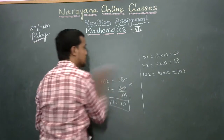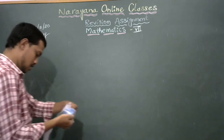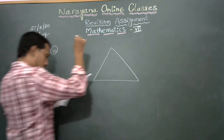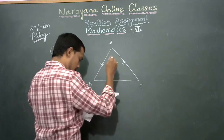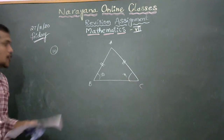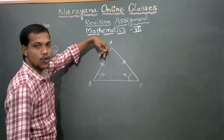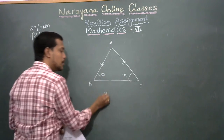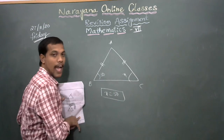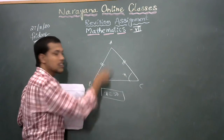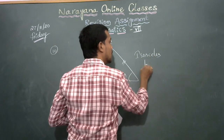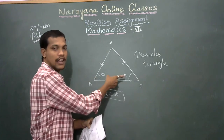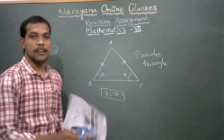Now the last question: in triangle ABC, one angle is 50 degrees and another angle is x. Since two sides are equal, this is an isosceles triangle. In an isosceles triangle, two angles are equal. Since one angle is given as 50 degrees, the other equal angle x is also 50 degrees.